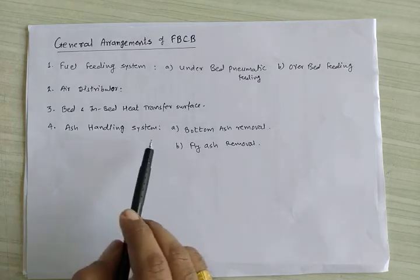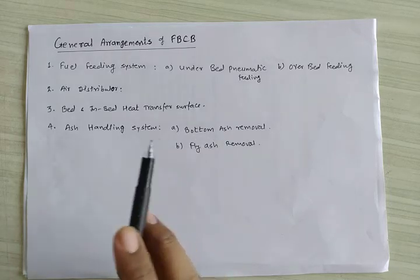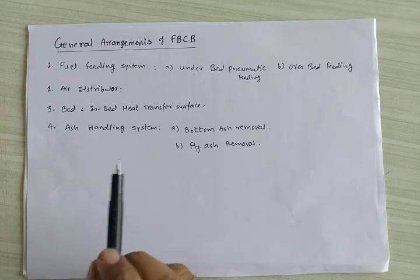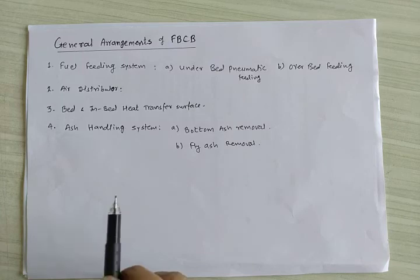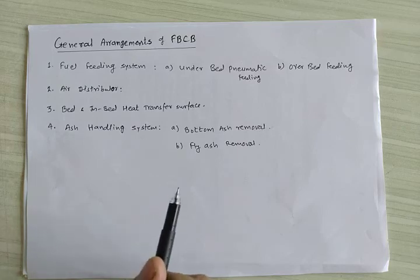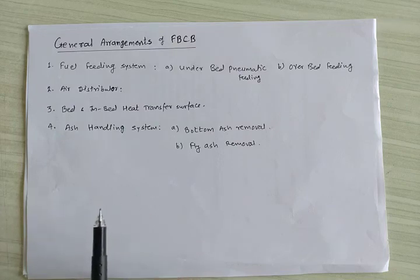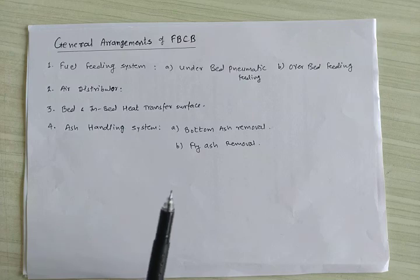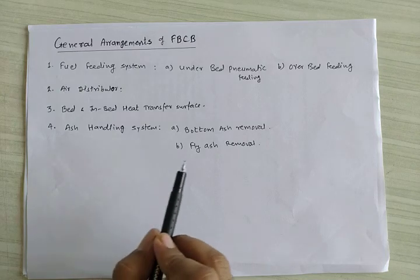In the ash handling system, bottom ash removal handles 40% of total ash. The fly ash amount to be handled in an FBC boiler is relatively high compared to conventional boilers, due to separation of particles by size and shape at high velocity. Fly ash should be removed in three stages: first in the convection section, second from the bottom of the air preheater, and finally a major portion is removed in the dust collector.